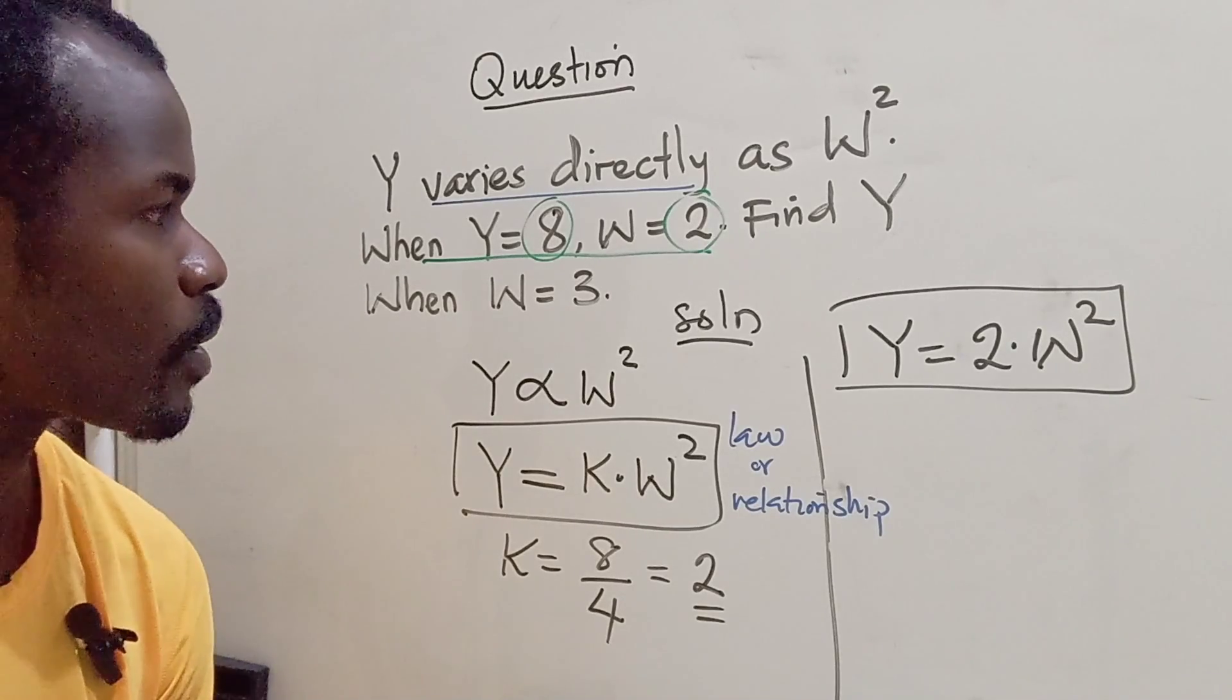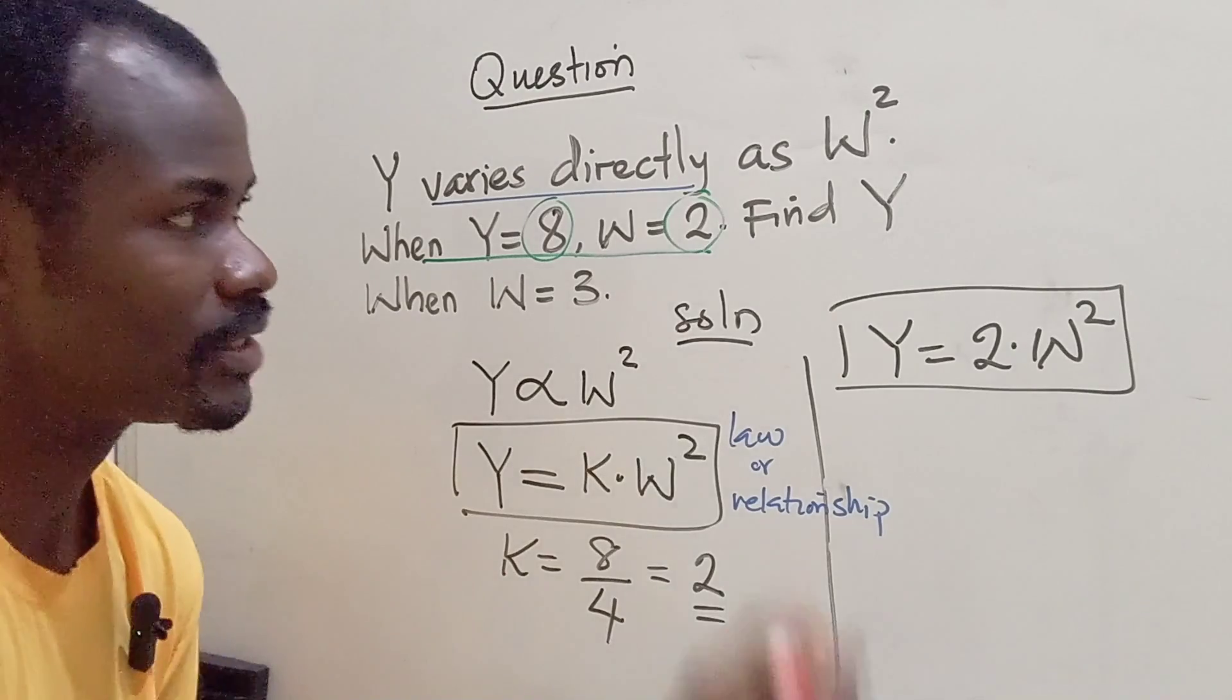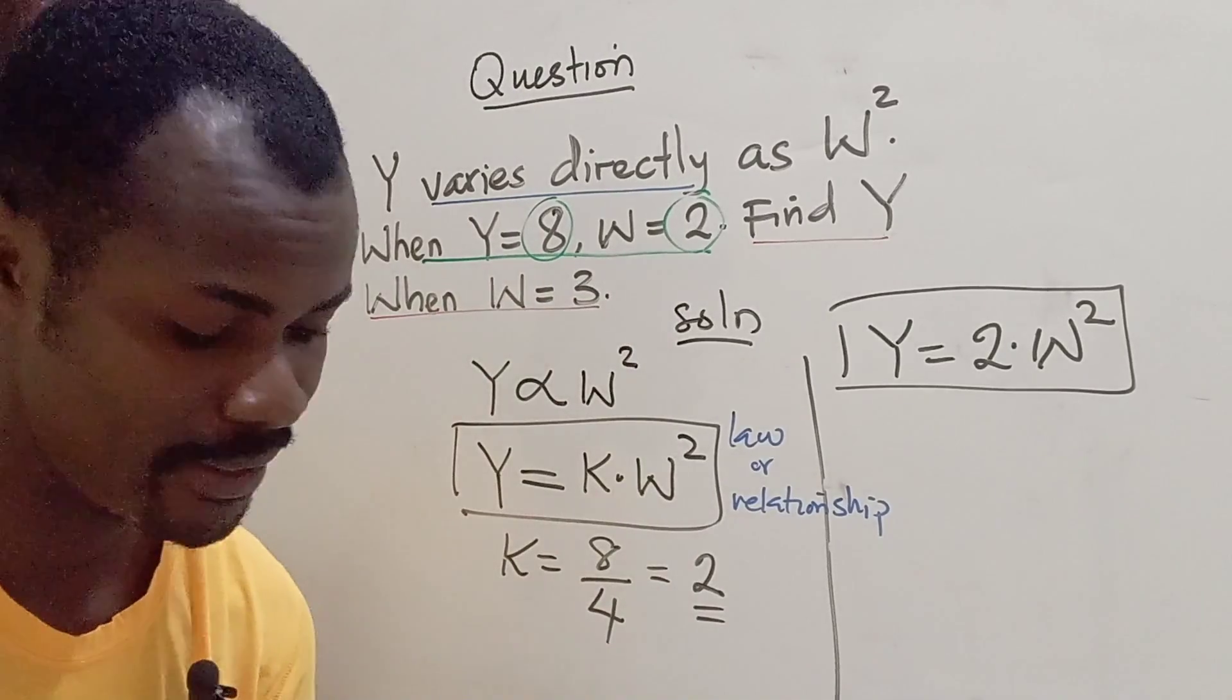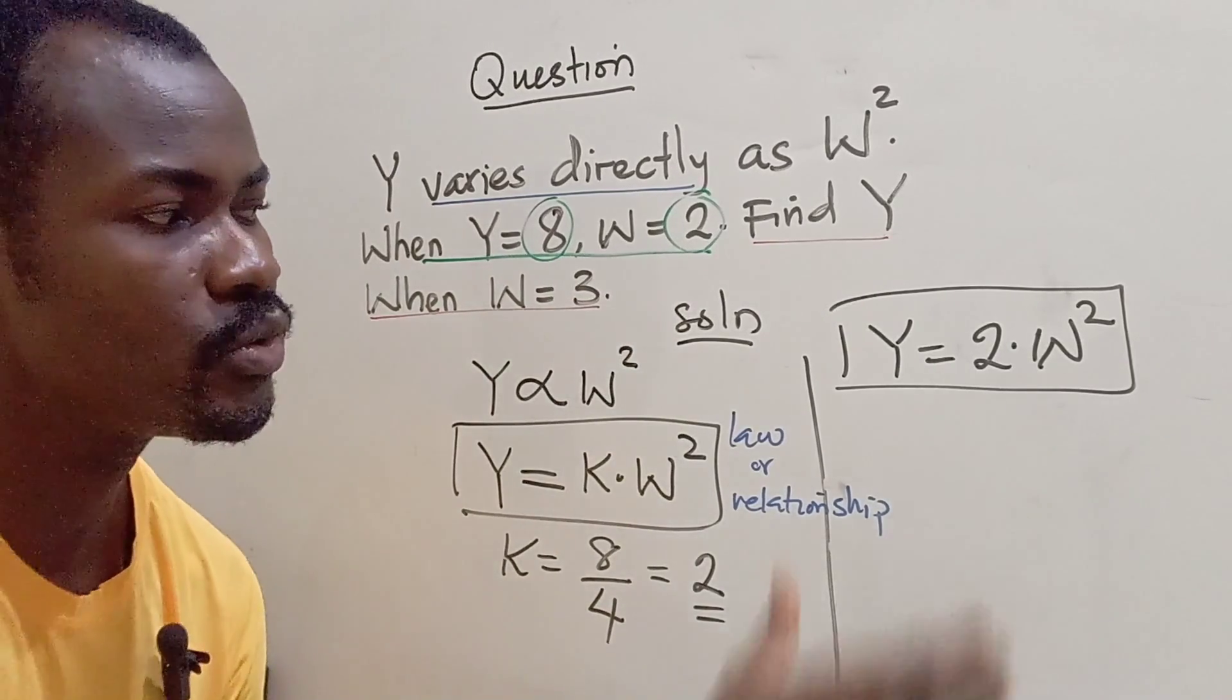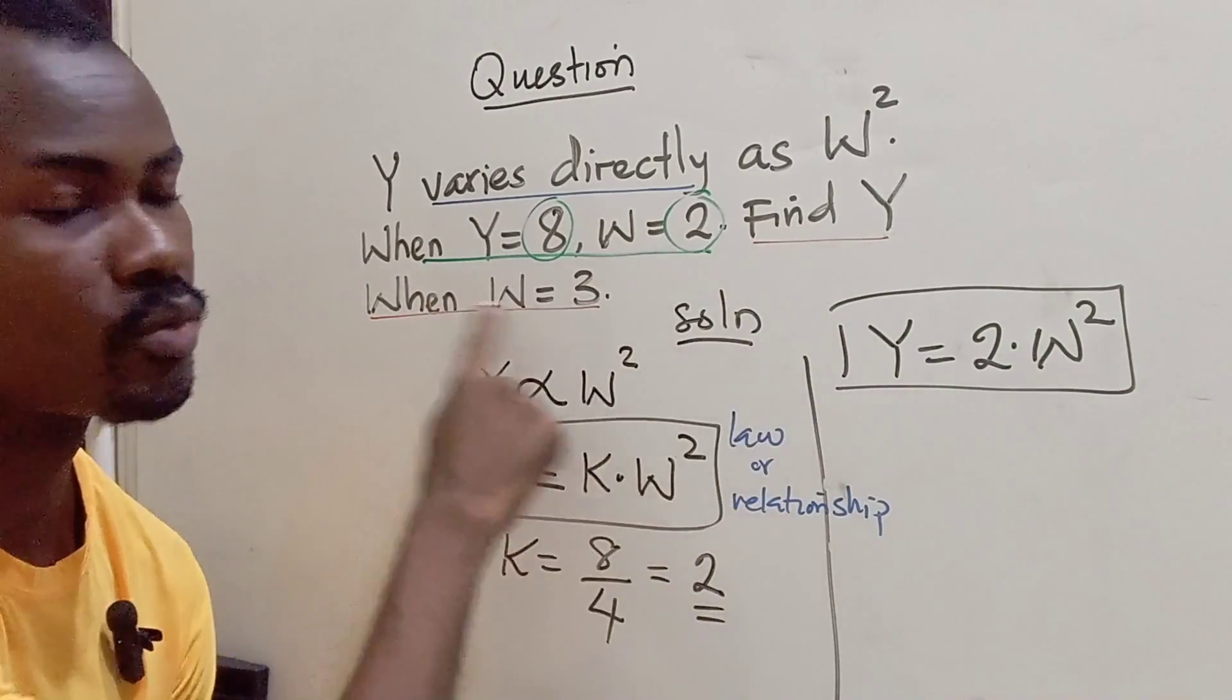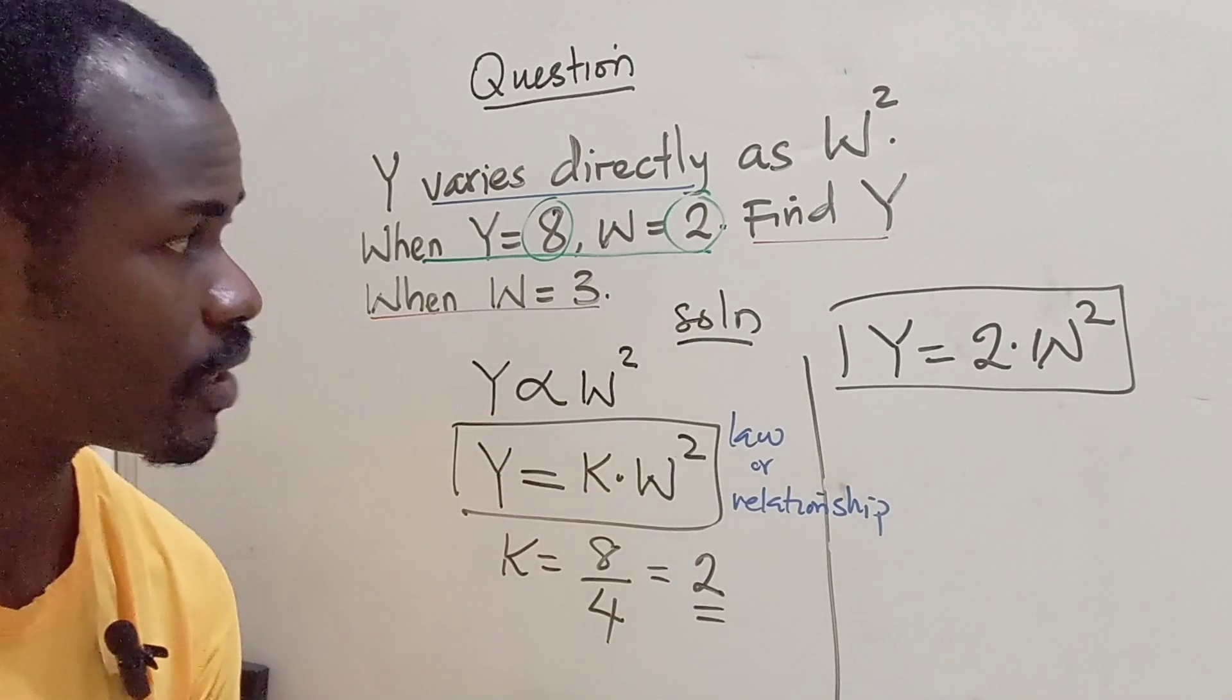So, the third line, which says find Y when W is 3. So we can now use this law or relationship to solve the last expression. So let's quickly do that.